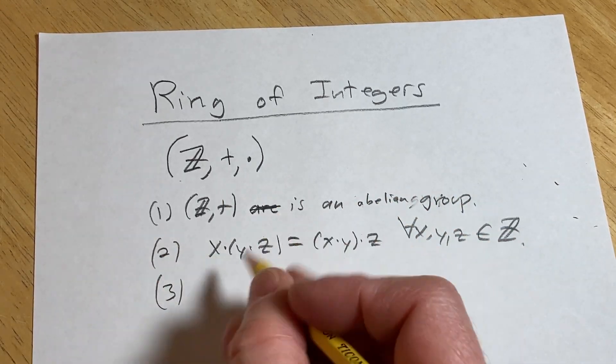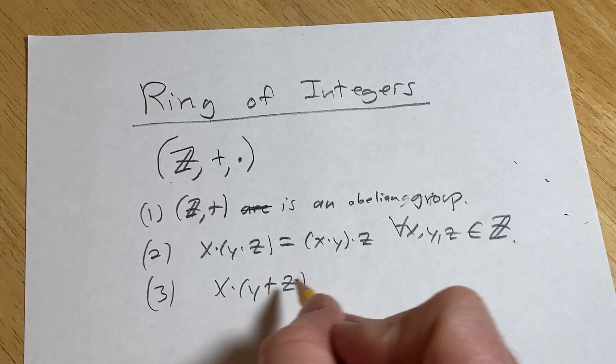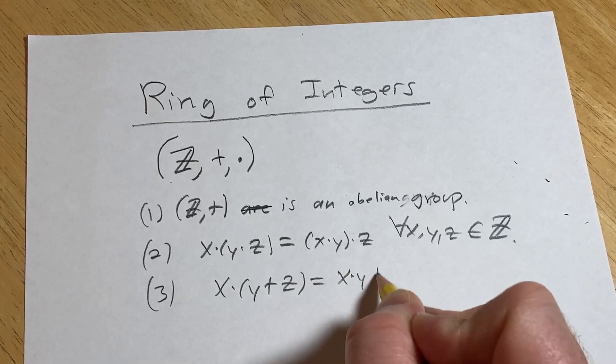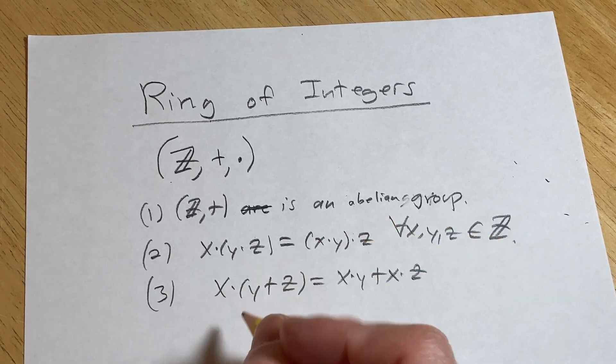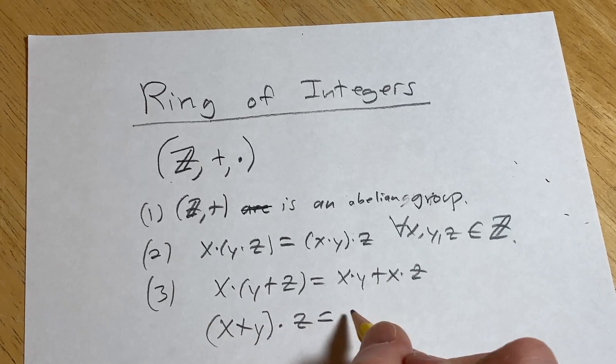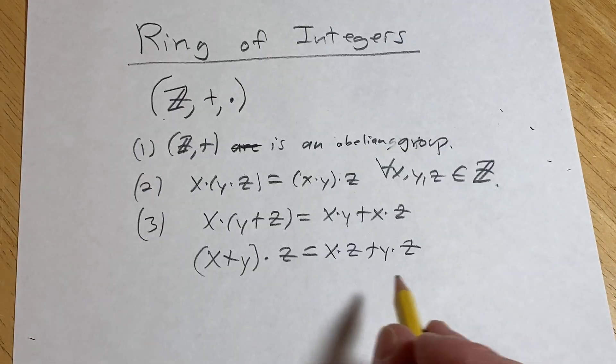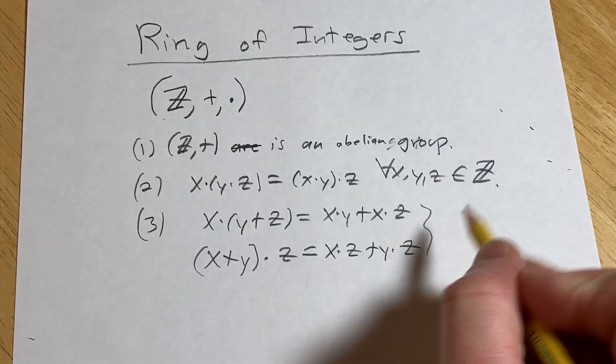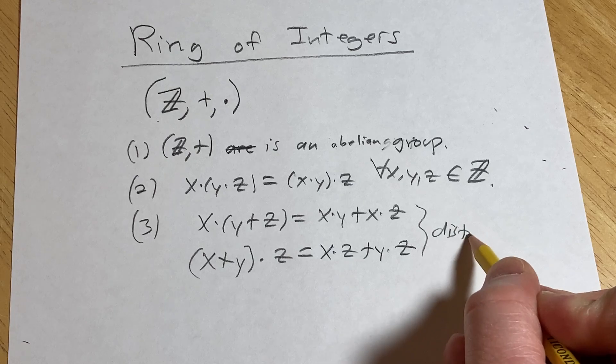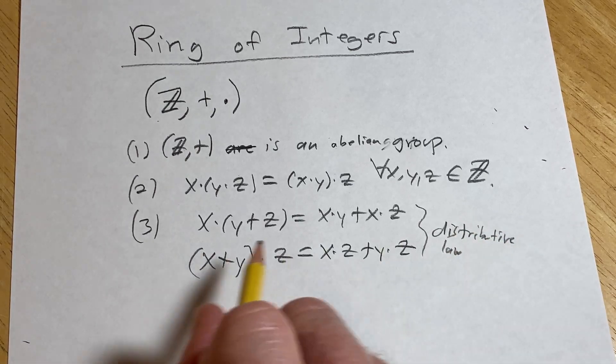And three, you have to have distributivity. So x times y plus z is x times y plus x times z. Likewise, x plus y times z is equal to x times z plus y times z, just like that. So these are called the distributive laws. These are really important because they connect multiplication and addition.